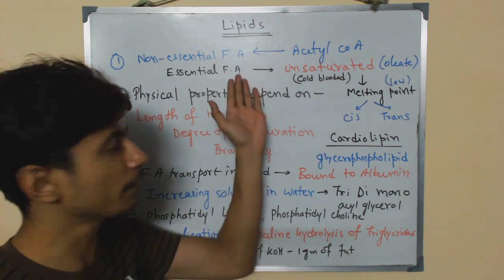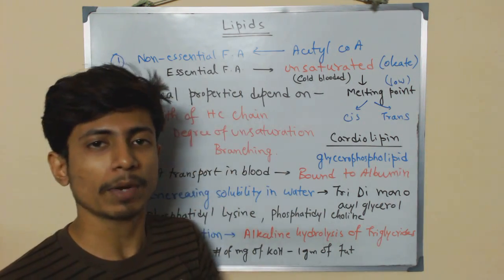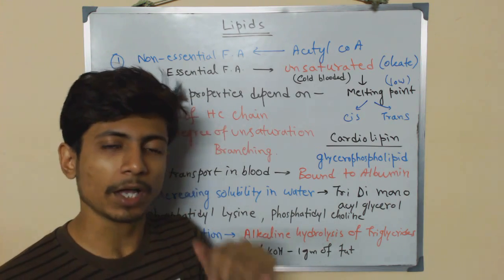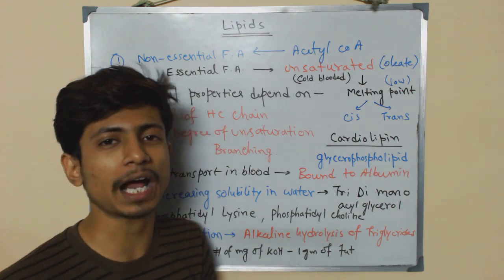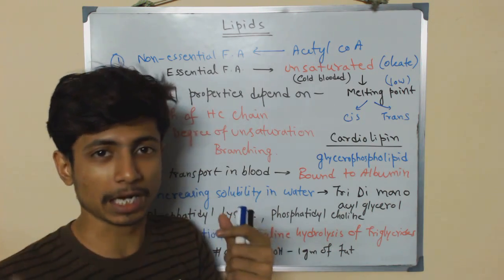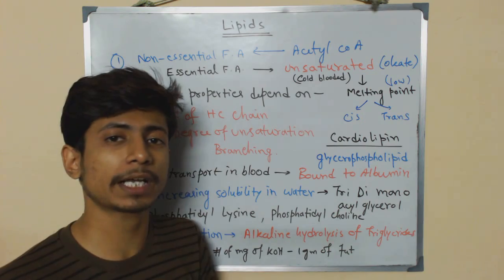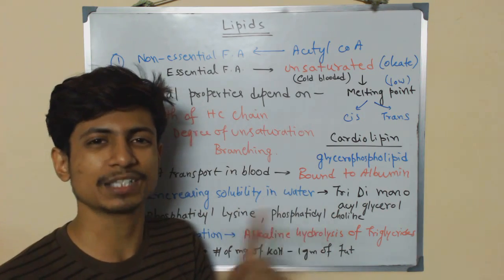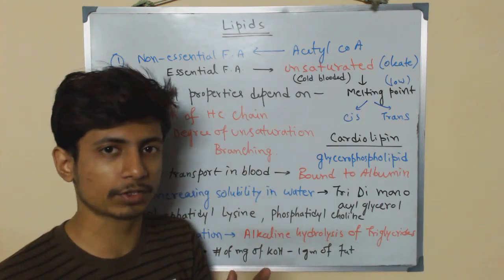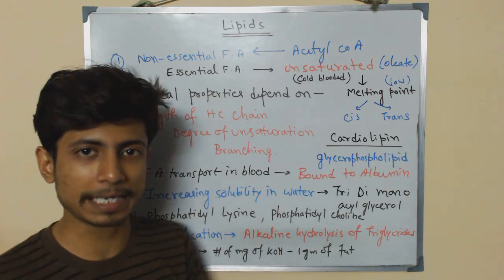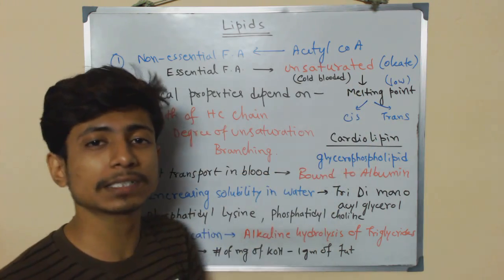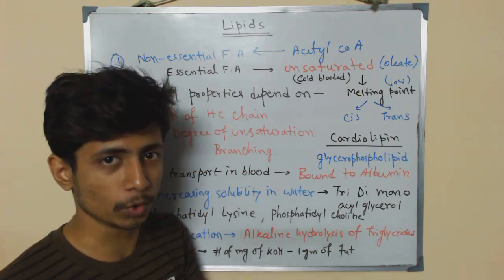When we talk about fatty acids, two important types come to mind: saturated and unsaturated. Unsaturated fatty acids have double bonds present, which cause kinks to form in the chain. Saturated fatty acids have no double bonds and no kinks, giving them a compact structure. Unsaturated fatty acids are generally good for our health.